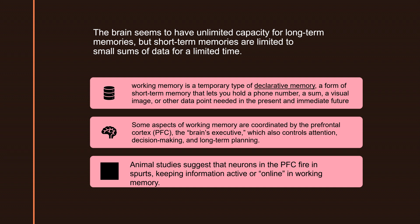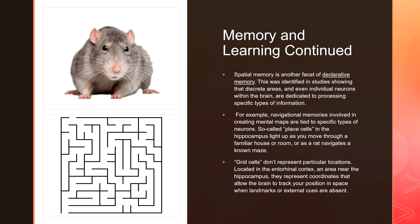Working memory is a temporary type of declarative memory — basically a form of short-term memory that lets you hold onto something small, like phone numbers. There are other types of declarative or working memories that help us navigate the world. For example, when you first walked into your high school, things seemed very new. But over time, you learned the layout — you knew where every room was, where the cafeteria was. This is a type of spatial memory, which is a form of declarative memory.